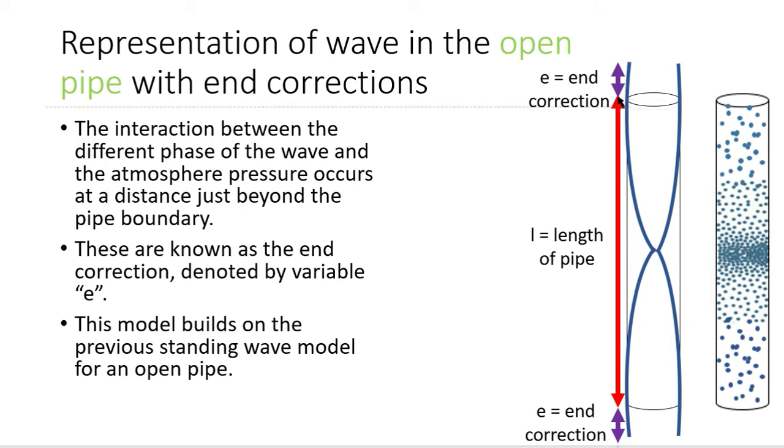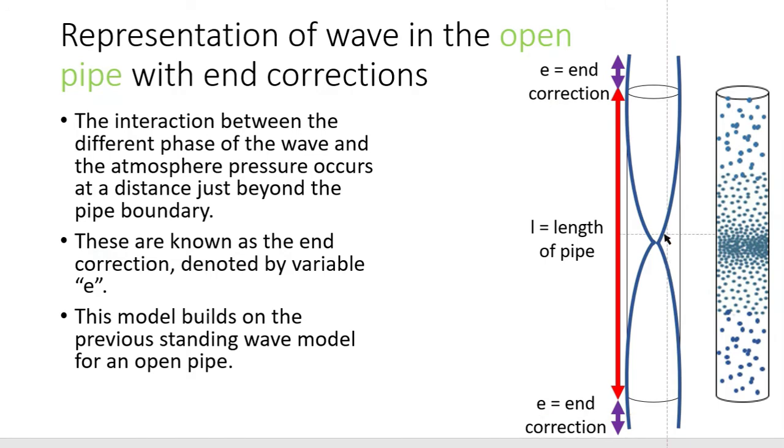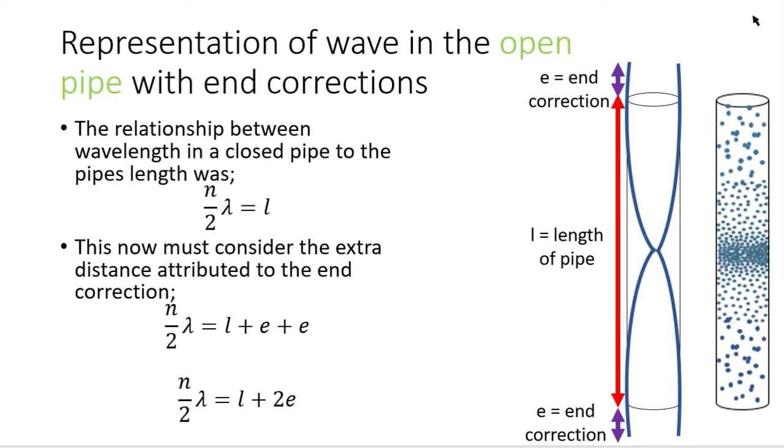So not only am I getting it on one end like I did in the closed pipe, no. Because I'm having compression phases and refraction phases going back and forth in creating a standing wave in an open pipe, I'm getting two end correction regions which are both equal in value. Because remember they're both related to that diameter that they possess.